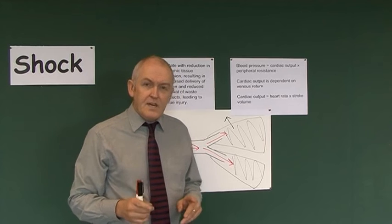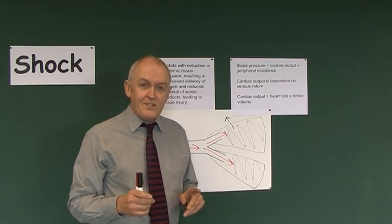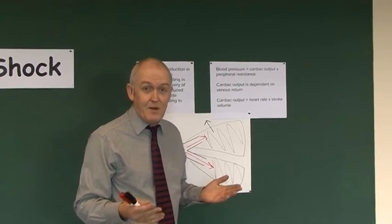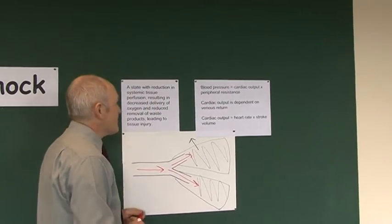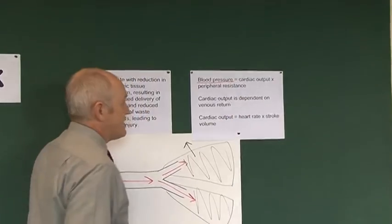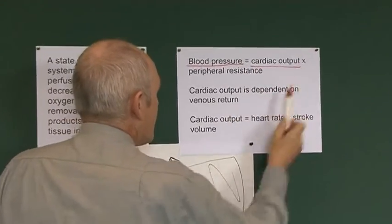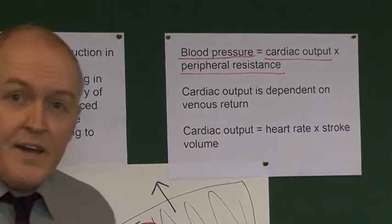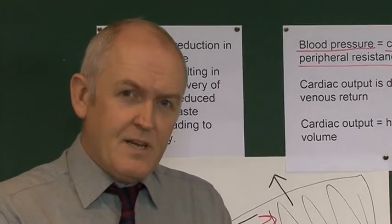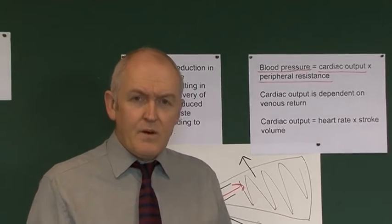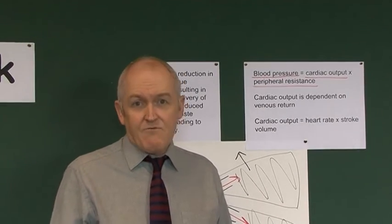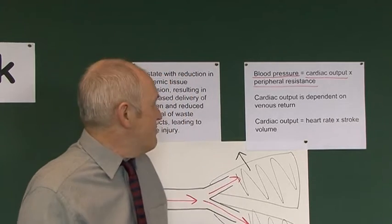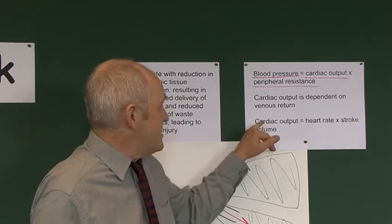To understand shock properly, we need to understand what we mean by blood pressure. Blood pressure is determined by cardiac output multiplied by peripheral resistance. Cardiac output is the amount of blood pumped out by the left ventricle in a one-minute period — at rest it might be in the order of five litres of blood per minute. That cardiac output is itself dependent on two factors.